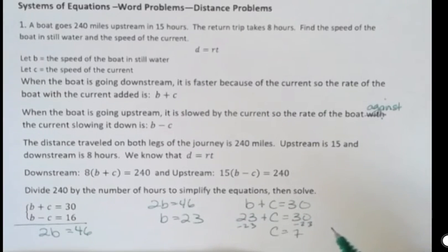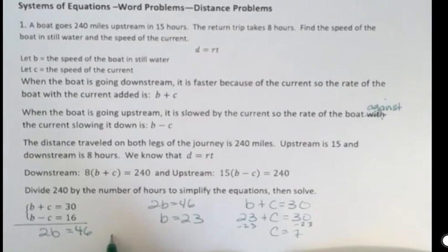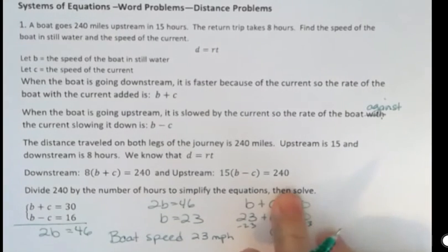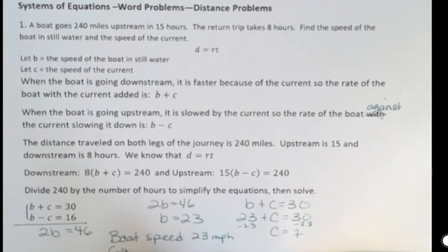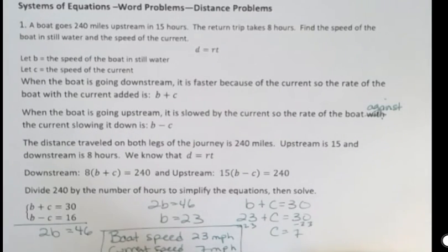My current then had to be going 7. So the speed of the boat, and this is in still water, was 23 miles per hour. And the speed of the current was 7 miles per hour. Notice 23 minus 7 would be 16, but 23 plus 7 would be 30. So that's a distance rate and time problem with the distances being equal.